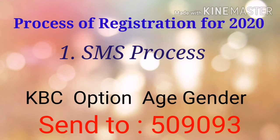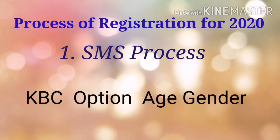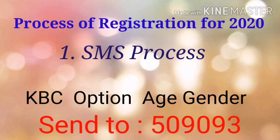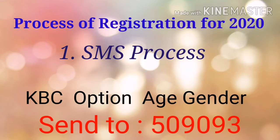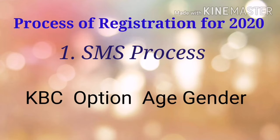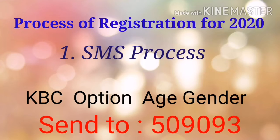If the question's answer is option A, write A; if B, write B; similarly C or D. Then you have to mention your age — write the complete age. For example, if you are 19 years two months, write 19 years two months. Next, you have to mention your gender: M for Male, F for Female.